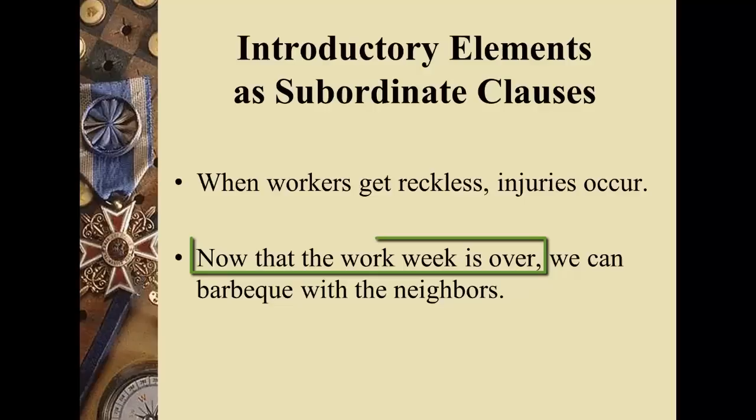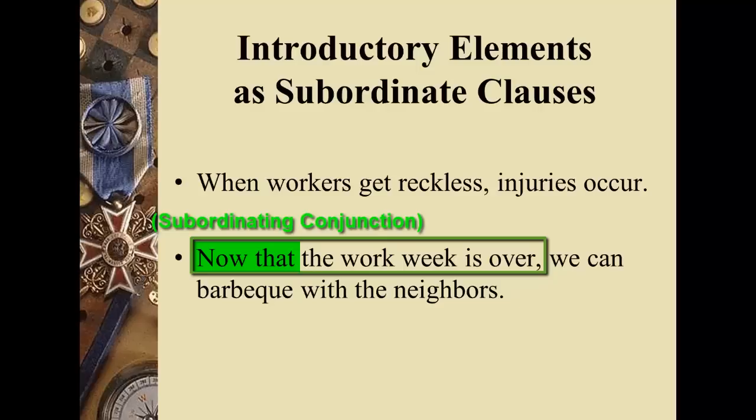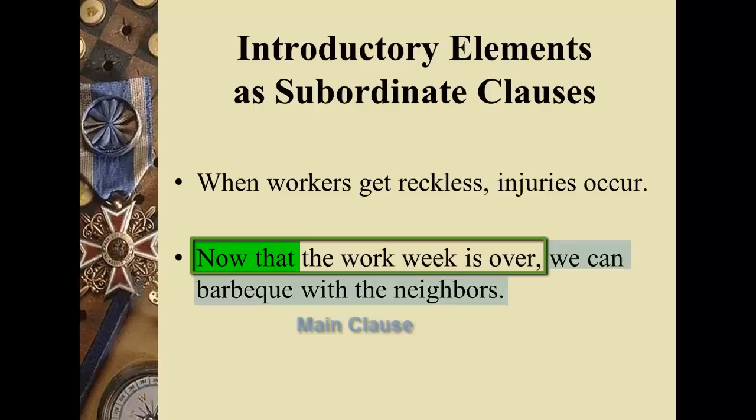In the next example, 'Now that the work week is over, we can barbecue with the neighbors.' Again, we have a subordinate clause — a clause being a group of words with a subject-verb relationship, because we have 'week is' as the subject-verb. But since we begin with 'now that,' this doesn't stand on its own as a complete thought. 'Now that the work week is over,' by itself, is a fragment. That's why you need to complete the thought with a main clause: 'we can barbecue with the neighbors.'